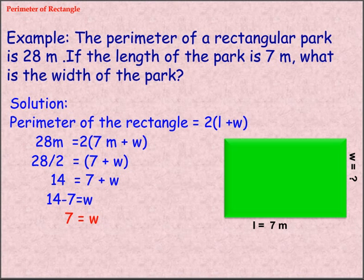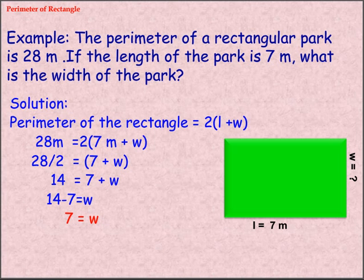Example: The Perimeter of Rectangle is 28 meters. 28 meters equals 2 into 7 meters plus W. 28 divided by 2 equals 7 plus W. 14 equals 7 plus W, so 14 minus 7 equals W, therefore W equals 7.